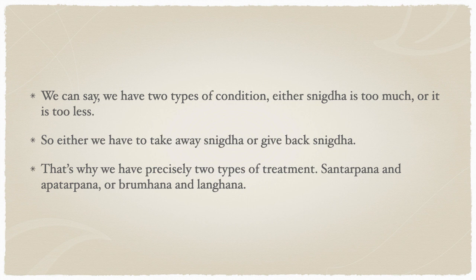Either we are giving nourishment or taking away nourishment. This is what happens in the seasons too: adana kala takes away energy and visarga kala gives back energy. All visarga kala gives snigtha, while adana kala takes away snigtha because ushna is prominent — the sun is near, it burns more jala, and reduces snigtha. That is why the body is weaker in adana kala and stronger in visarga kala.